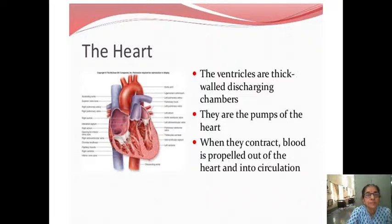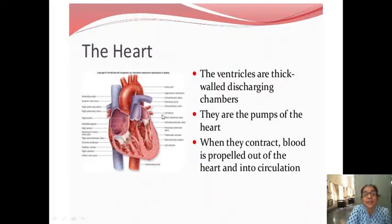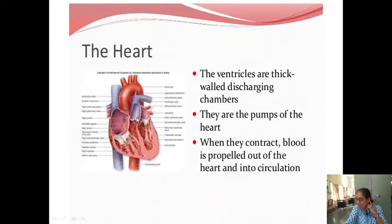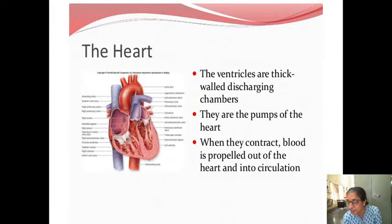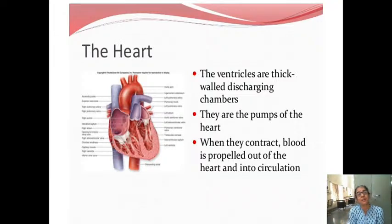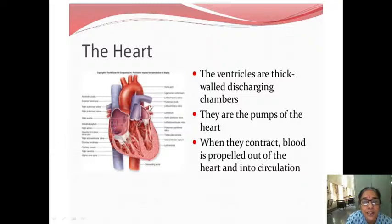The pulmonary artery will go into the lungs carrying deoxygenated blood. It will go into the lungs, remove carbon dioxide, and get oxygen from the lungs, then enter the left atrium via the pulmonary veins. All arteries carry oxygenated blood except the pulmonary artery, and all veins carry impure blood except the pulmonary vein. The pulmonary vein has oxygenated blood and it is coming into the left atrium.